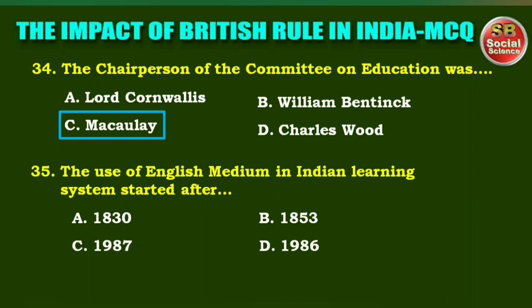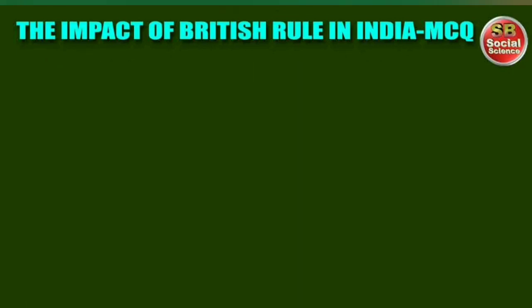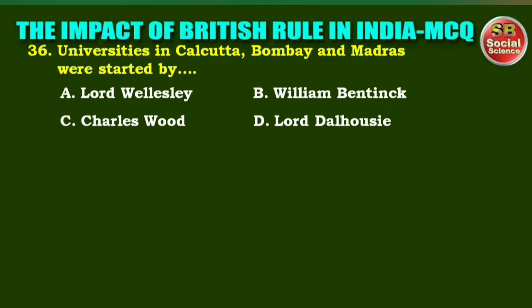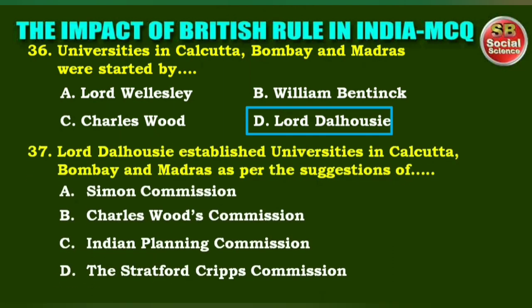Next one: The use of English medium in India's learning system started after — options are: 1830, 1853, 1987, 1986. The right answer is option A: 1830. Next question: Universities in Calcutta, Bombay, and Madras were started by — Lord Wellesley, William Bentinck, Charles Wood, Lord Dalhousie. The right answer is option D: Lord Dalhousie. Next question: Lord Dalhousie established these universities as per the suggestions of Charles Wood's Commission. The right answer is option B: Charles Wood's Commission.